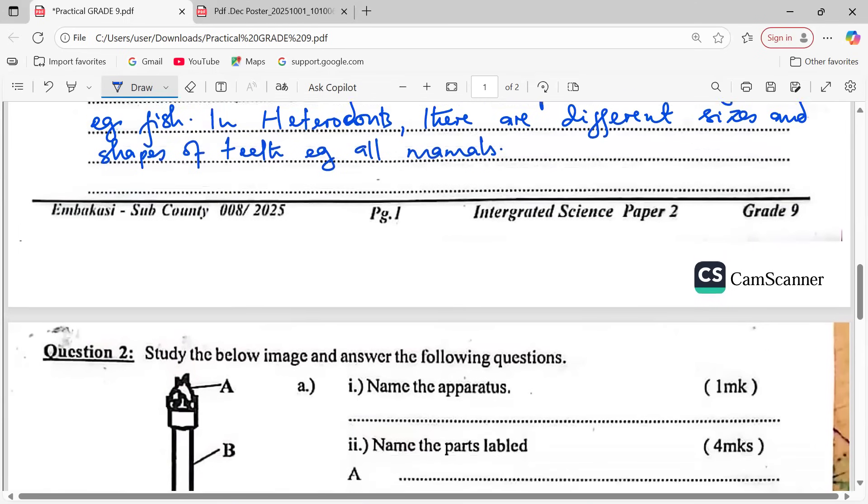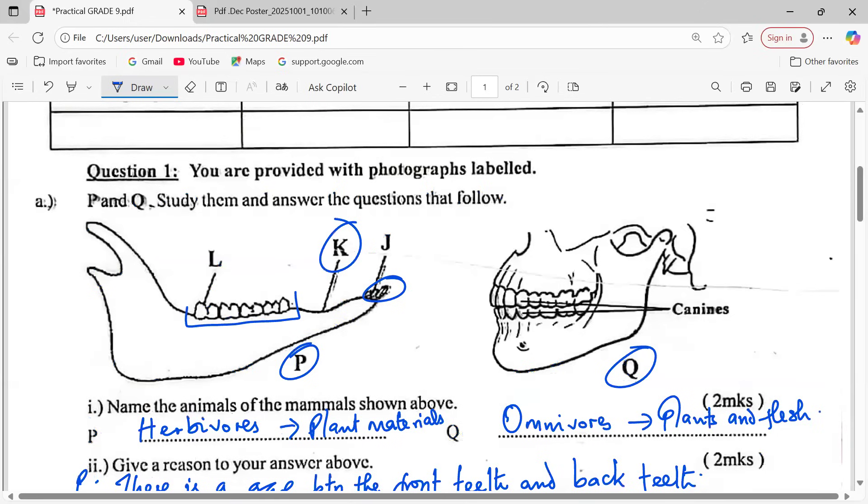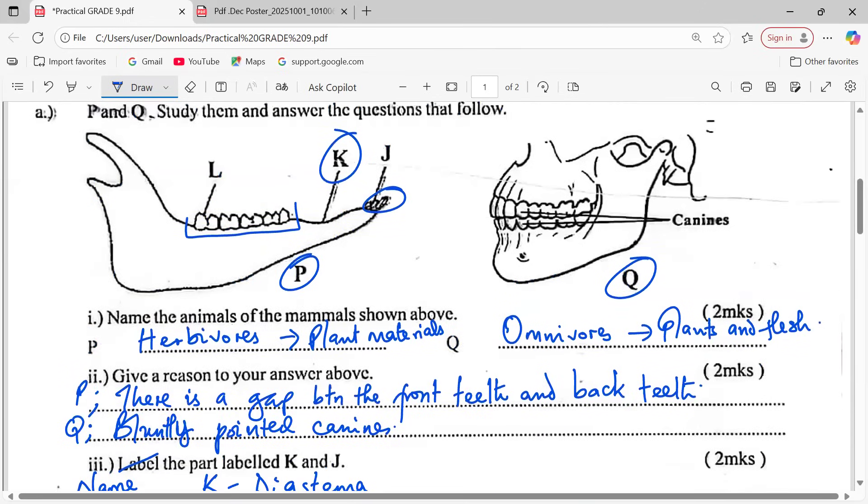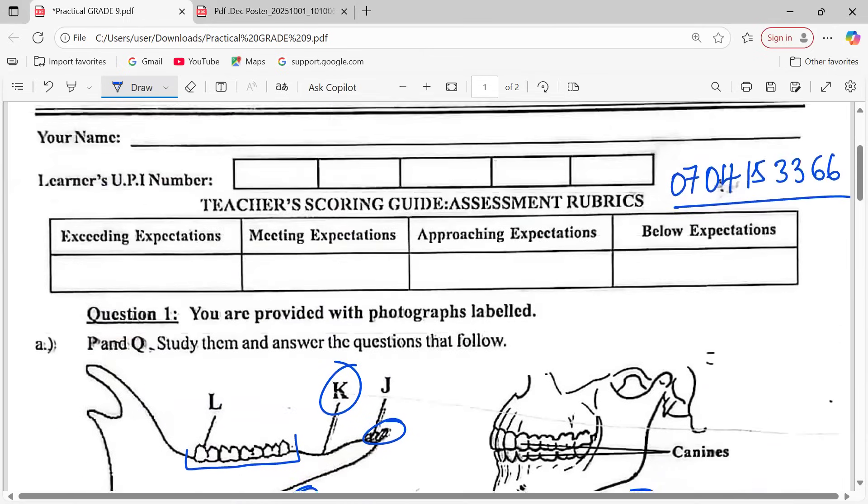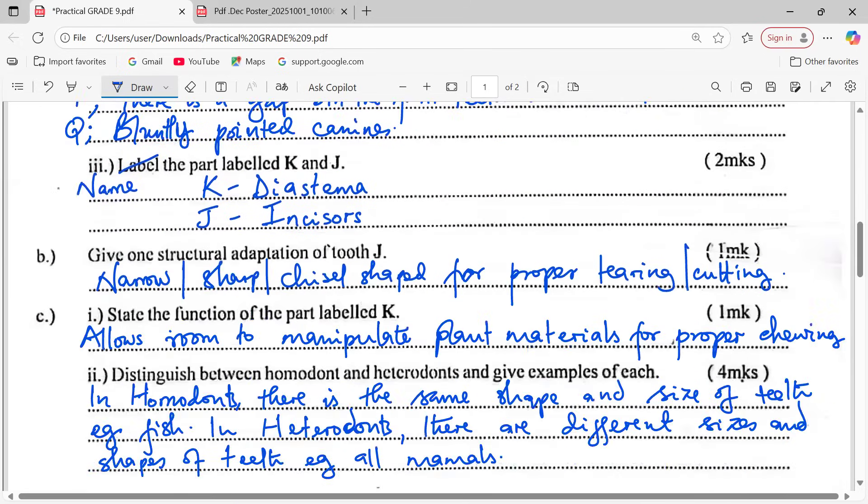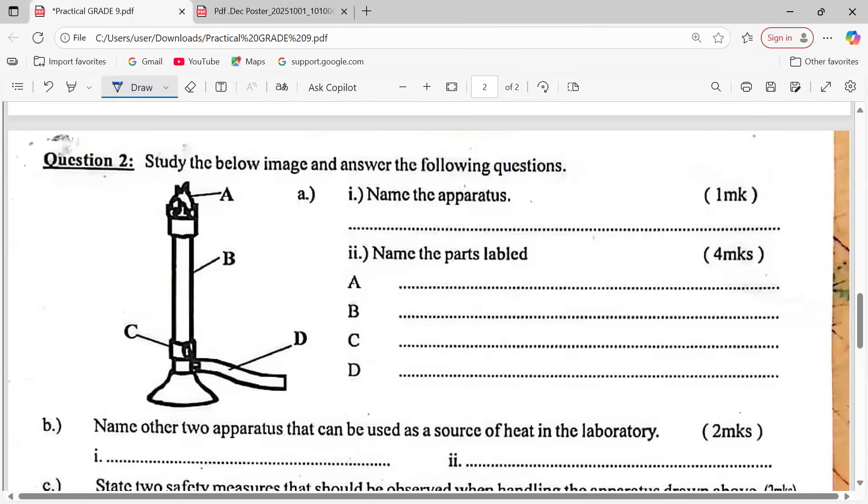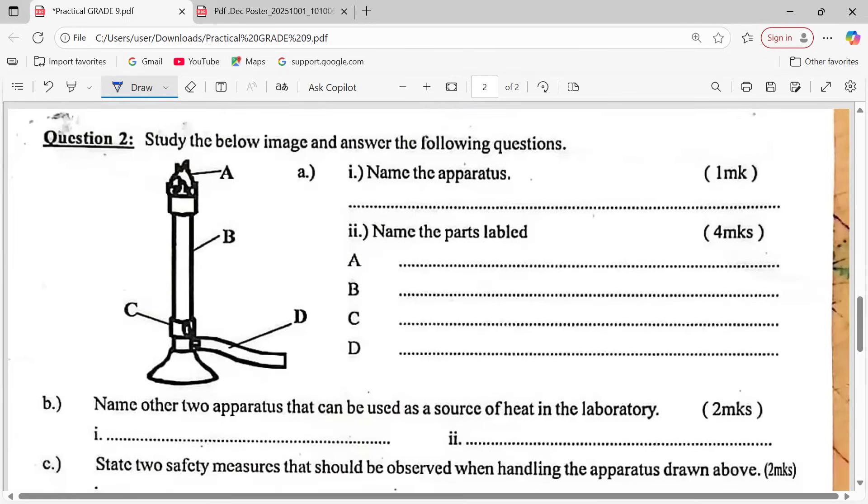Remember in this particular type of settings whereby we expect structured questions with diagrams and photographs, we expect the three branches of science to feature. For example here we are dealing with living things and we can say that question number one is from biology, whereby we deal with living things, plants and animals. In question two now you can see we are studying a certain image here. Name the apparatus. When you look at these apparatus you discover that it's a Bunsen burner.